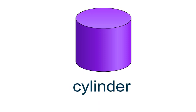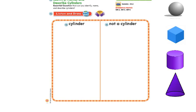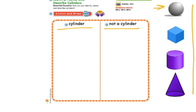Let's get started with the lesson. Just like the other lessons we've been working on, we are going to be sorting our 3D shapes. We have a bunch of 3D shapes, and we are going to sort them into cylinder and not a cylinder. We have this first shape — does anyone remember what this shape is called? This is our sphere, and we know that a sphere is not a cylinder. It has curves like a cylinder, but it doesn't have any flat surfaces.